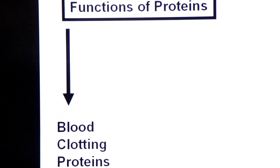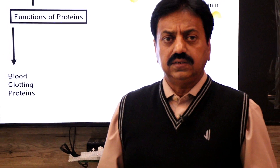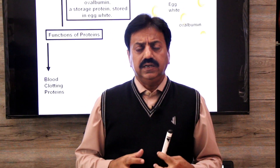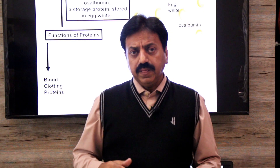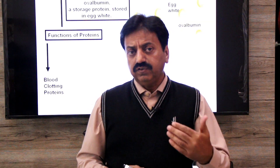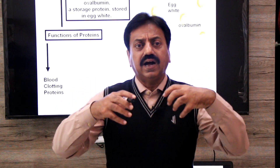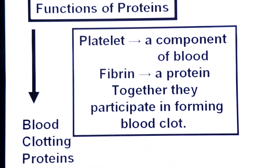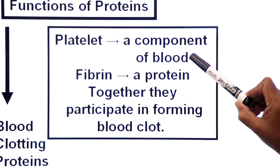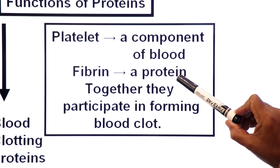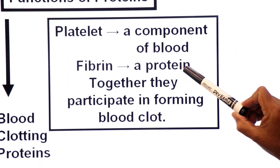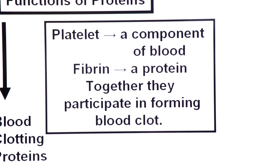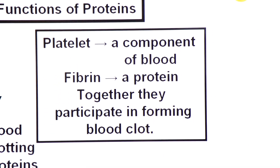Next are blood clotting proteins. When we get a cut and our skin is injured, bleeding starts, and after some time the bleeding stops — this is called blood clotting. Two very important proteins involved are thrombin and fibrinogen. They work with platelets to clot the blood and stop the bleeding. Fibrin is a thread-like, sticky protein that helps clot the blood. Blood platelets and fibrin work together, participating in forming a blood clot and sealing the wound.